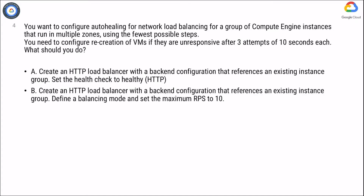Option B: Create an HTTP load balancer with a back-end configuration that references an existing instance group. Define a balancing mode and set the maximum RPS to 10.